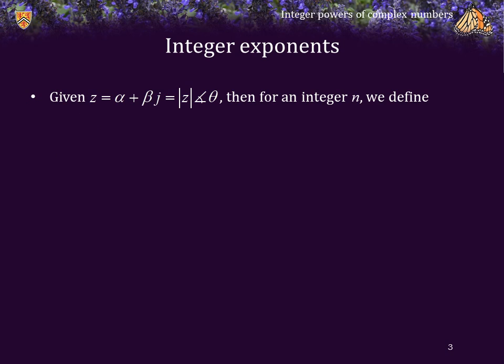Given z is equal to alpha plus beta j, or the magnitude of z phase theta for an appropriate theta, then for an integer n we will define z to the n as: if n is less than 0, we raise the reciprocal of z to the power negative n; if n is equal to 0, the result is 1; and if n is greater than 0, it will be z times z to the n minus 1. This is a recursive definition of z to the n.